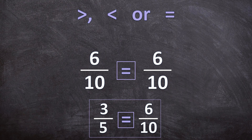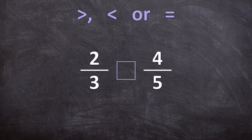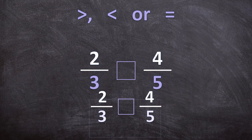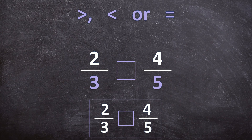Now let's have one more example. Here we also have numerators that are not the same and denominators that are not the same. Like in the previous example, we need to change one or both of the fractions so that the denominators are the same. Before I change the fractions, I'm just going to write them down so that we can come back to them later. Now we can start changing the fractions.